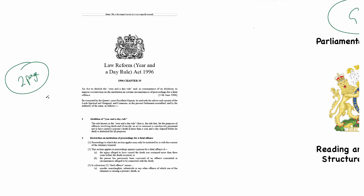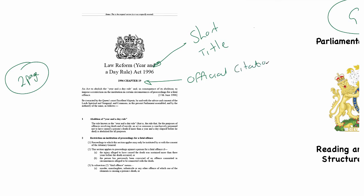The first thing to think about is the name of the act — it's officially called the short title, and the name of the act is always found under the crown. In this instance, the short title is the Law Reform (Year and a Day) Rule Act 1996. Below that we find the official citation, which here reads '1996 Chapter 19', meaning it was the 19th act to be enacted or passed in 1996.